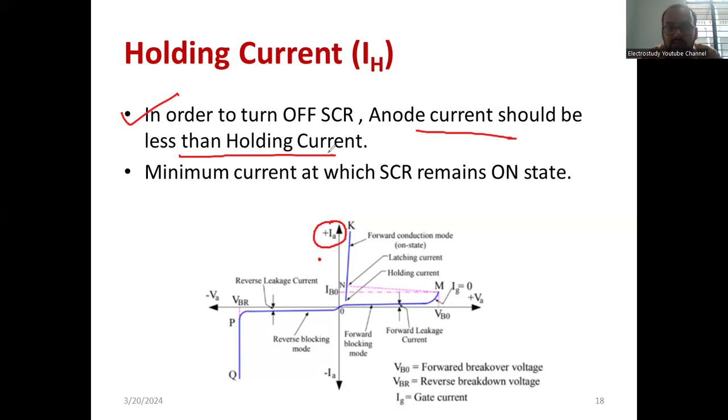To turn off the device, you need to reduce the anode current below the holding current. Look at this. Till here, the device is on. What you are supposed to do is reduce the anode current. IA means anode current. Try to reduce the anode current. You keep on reducing the anode current. When it, like this point is called a holding current. If it falls below the holding current, then immediately you can see that the device will be under off stage.